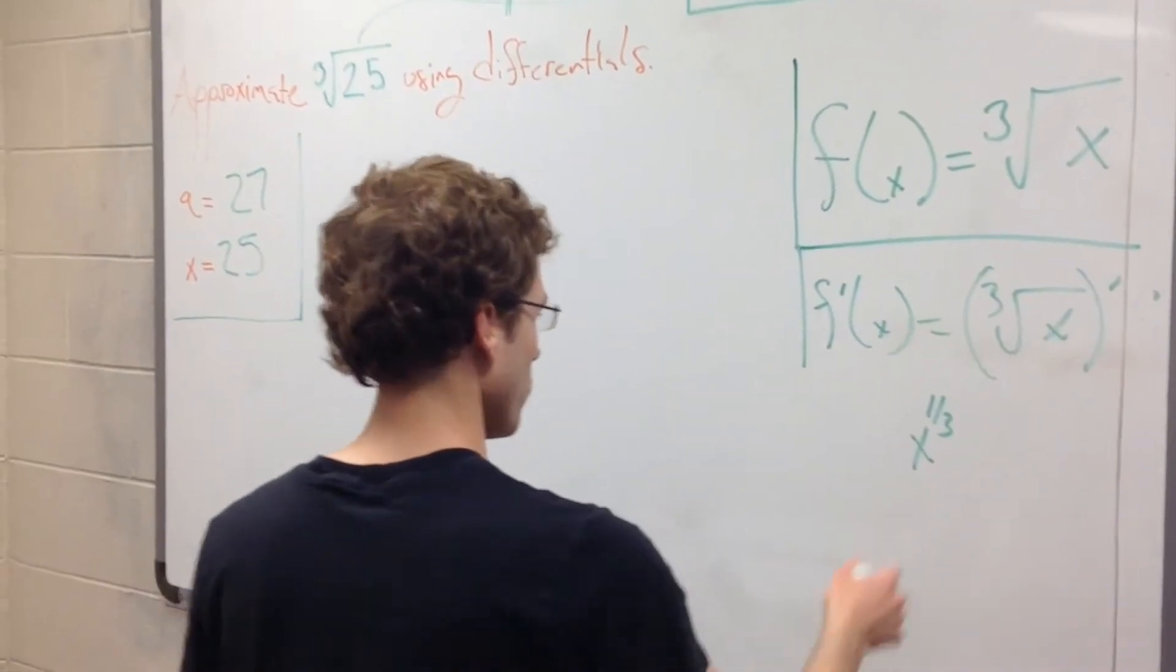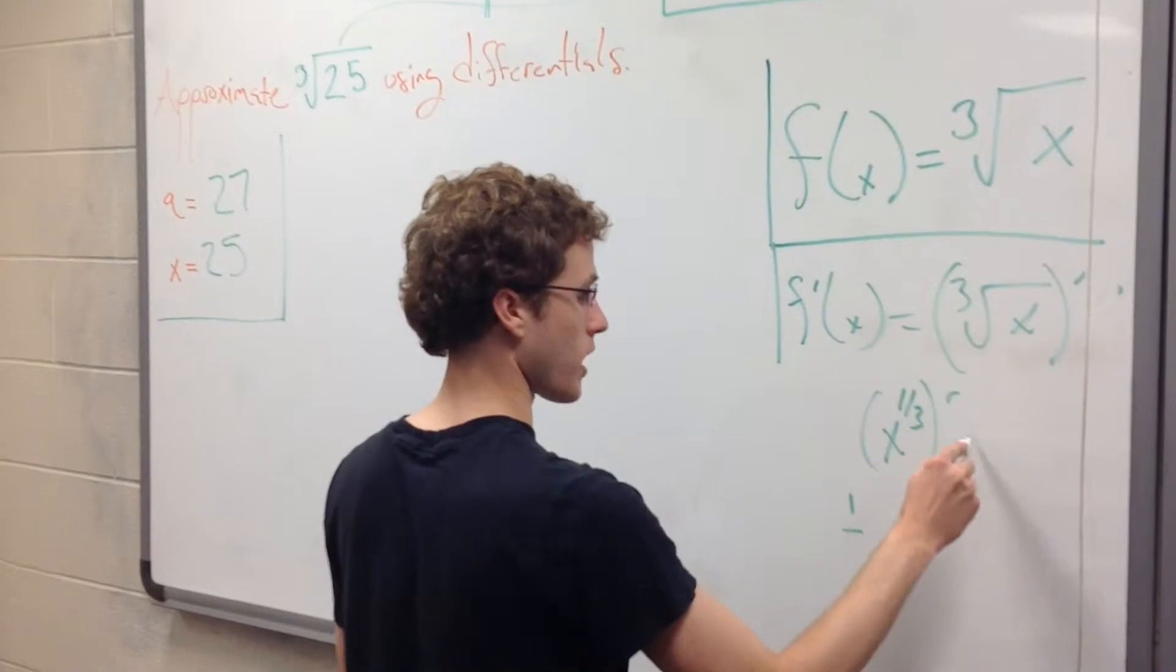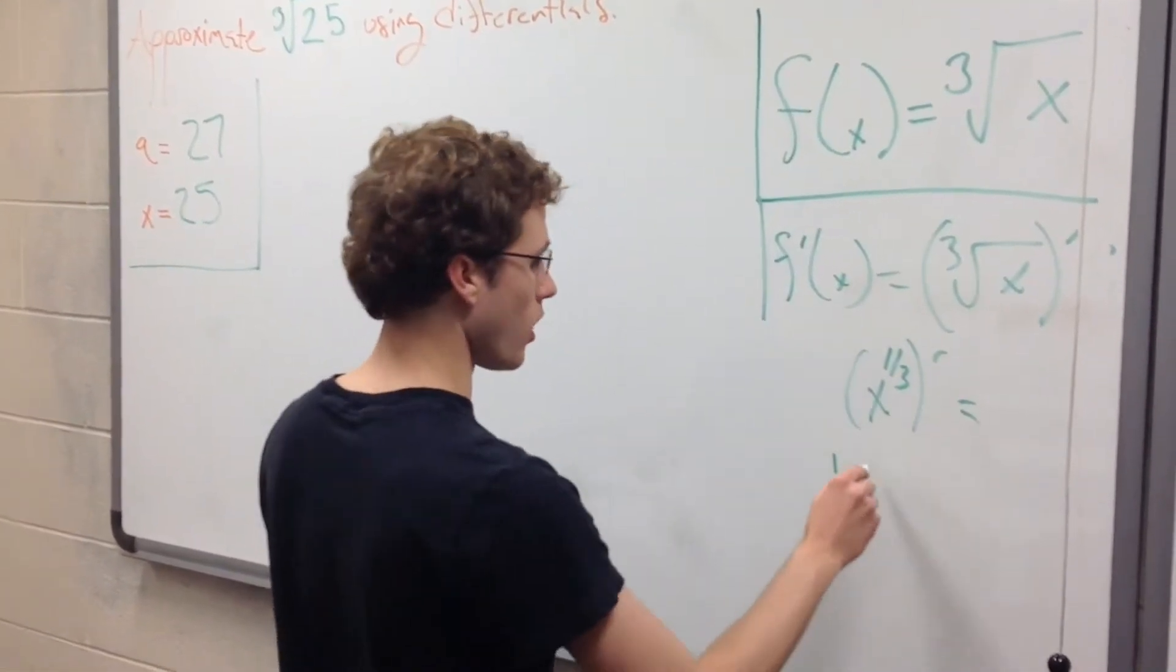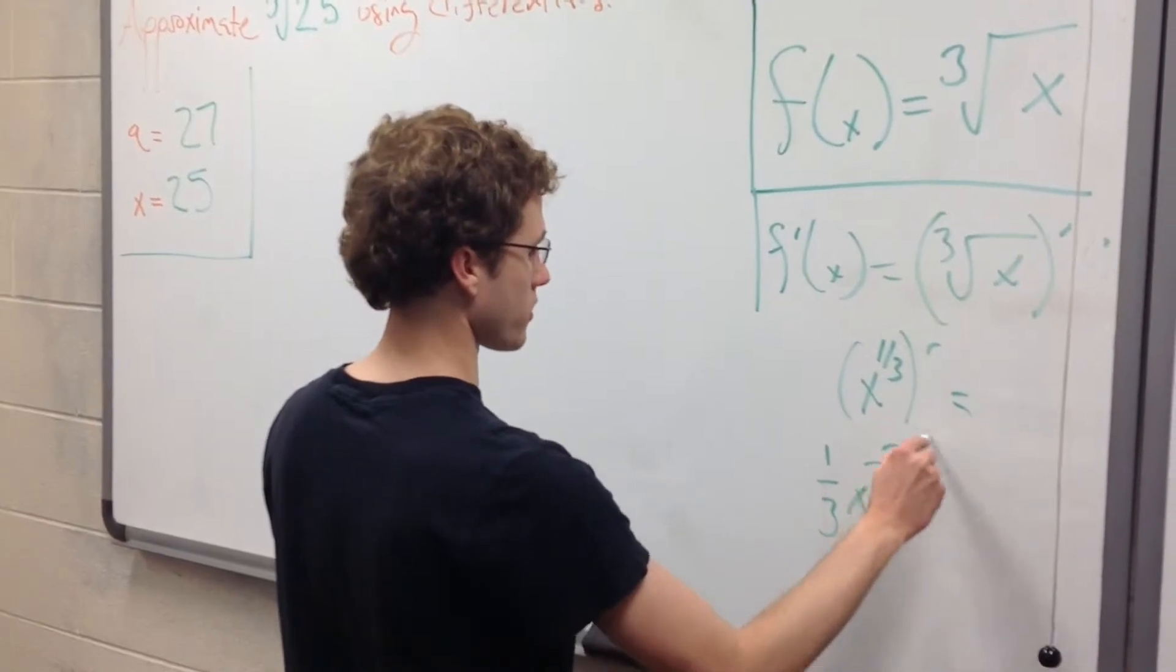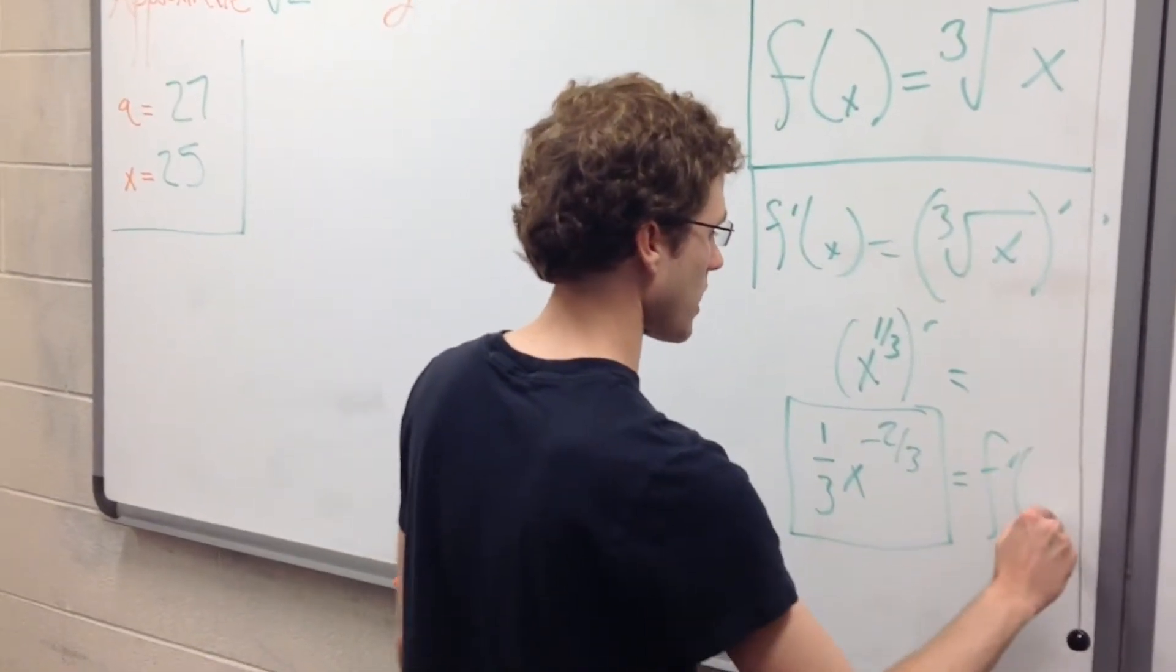So now let's just use the power rule and let's take this down. This prime equals one-third x to the negative two-thirds. So this is f prime of x.